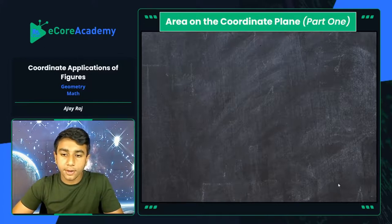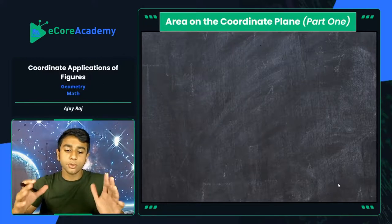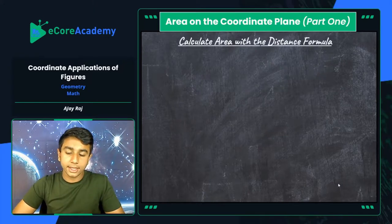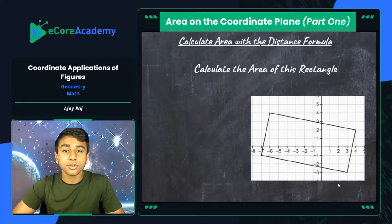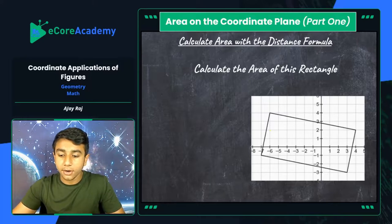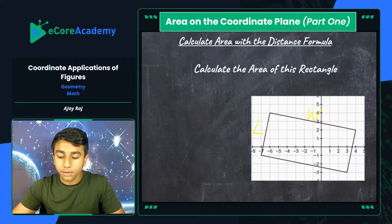Let's look at two practice problems. One is going to be with a rectangle and one with a parallelogram. Let's calculate the area of this rectangle as shown below. This rectangle does not have horizontal or vertical sides, so we can't use the shortcut — we have to use the distance formula. We only need the length and the width, so we need two sides. I'll label one side our length and the other our width.